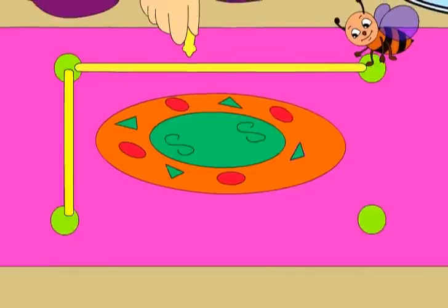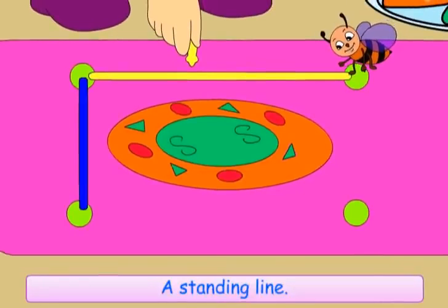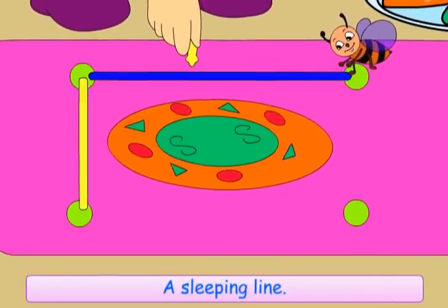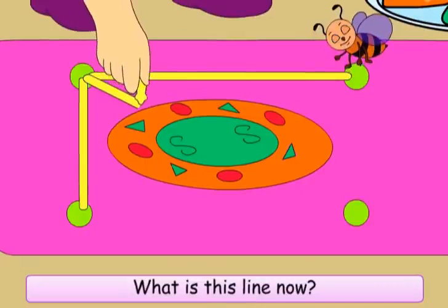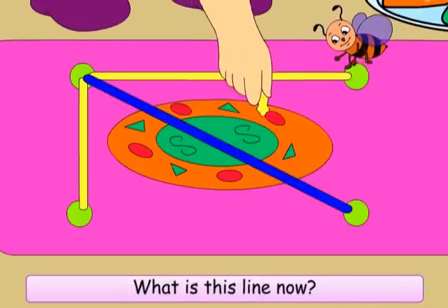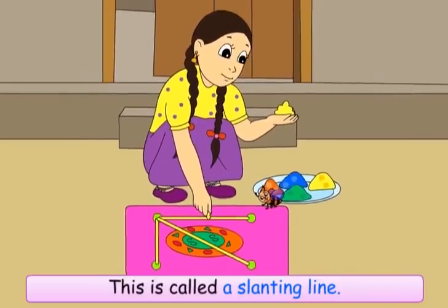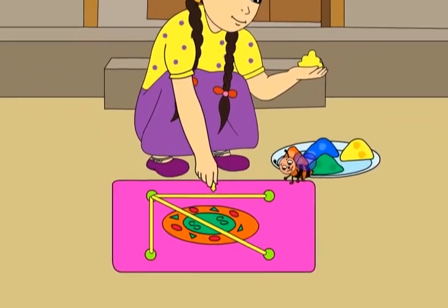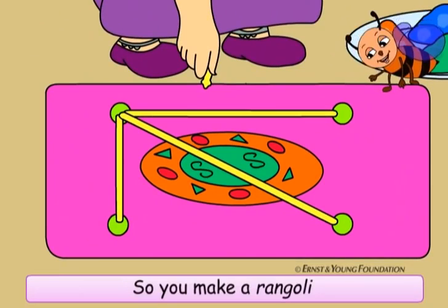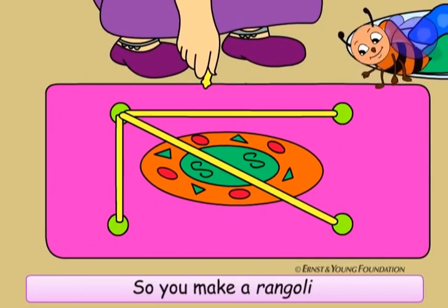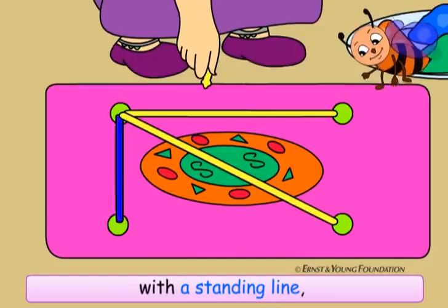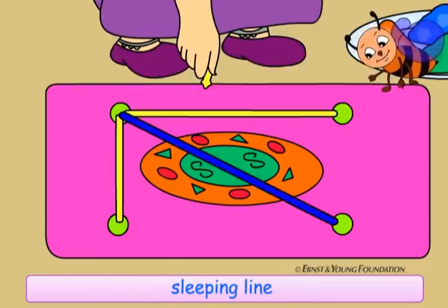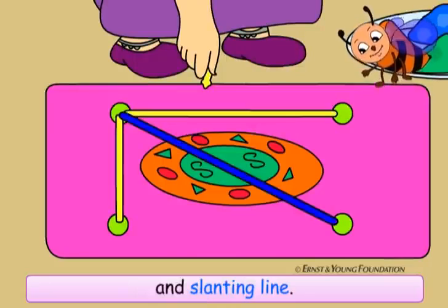They repeat together: 'A standing line, a sleeping line.' Buzz asks: 'What is this line now?' Meenu answers: 'This is called a slanting line.' Buzz confirms: 'So you make a rangoli with a standing line, sleeping line and slanting line.'